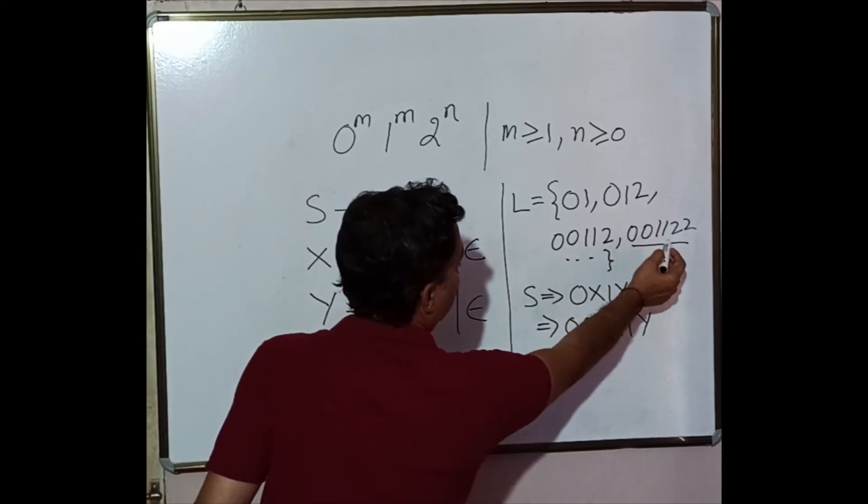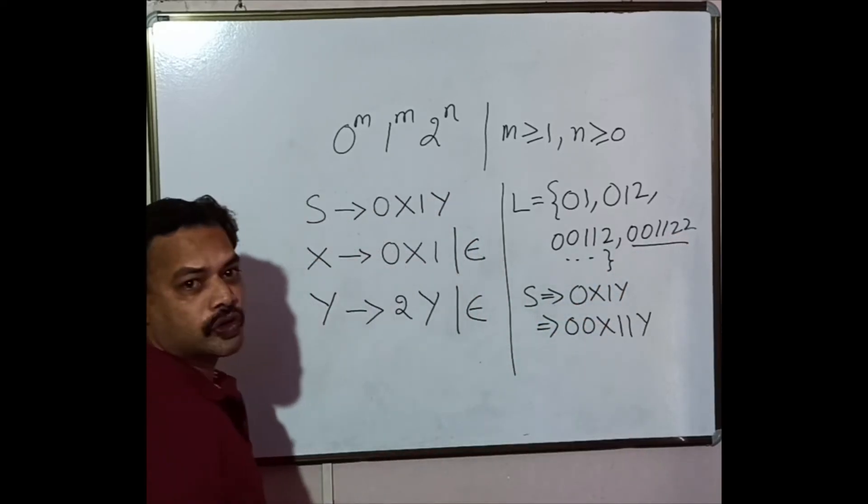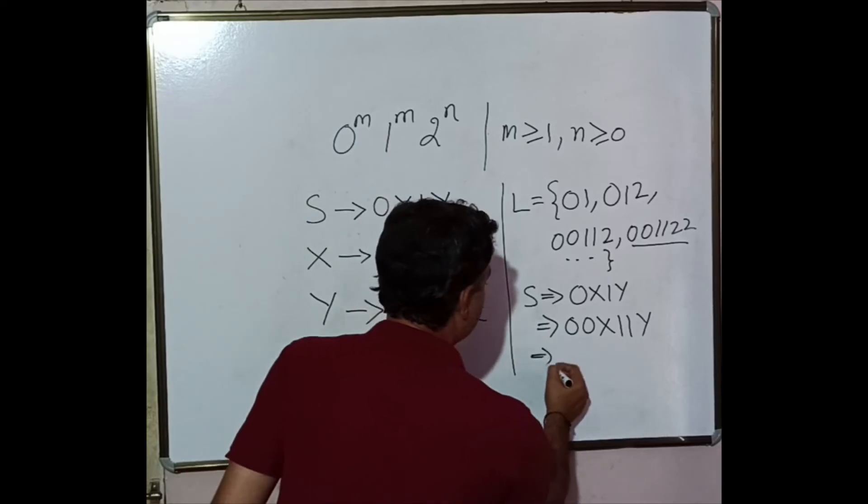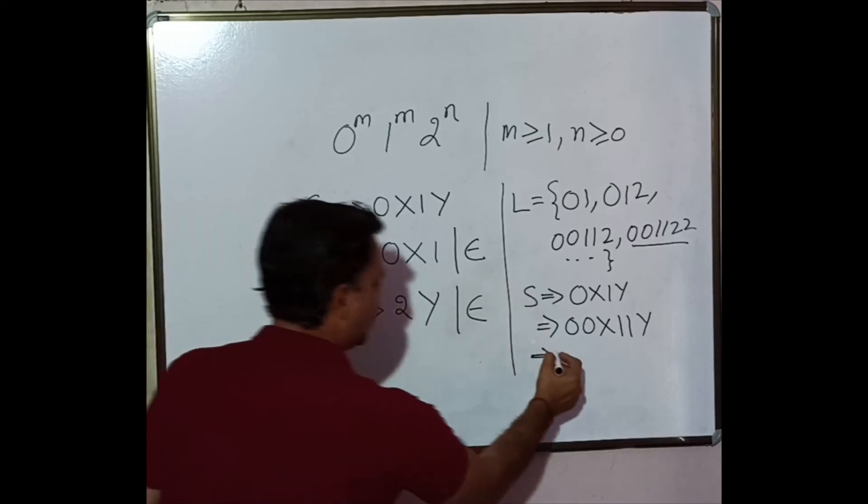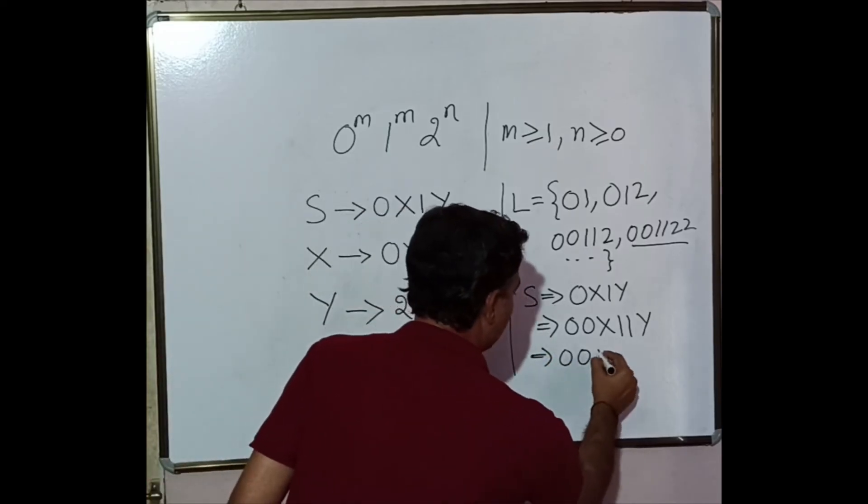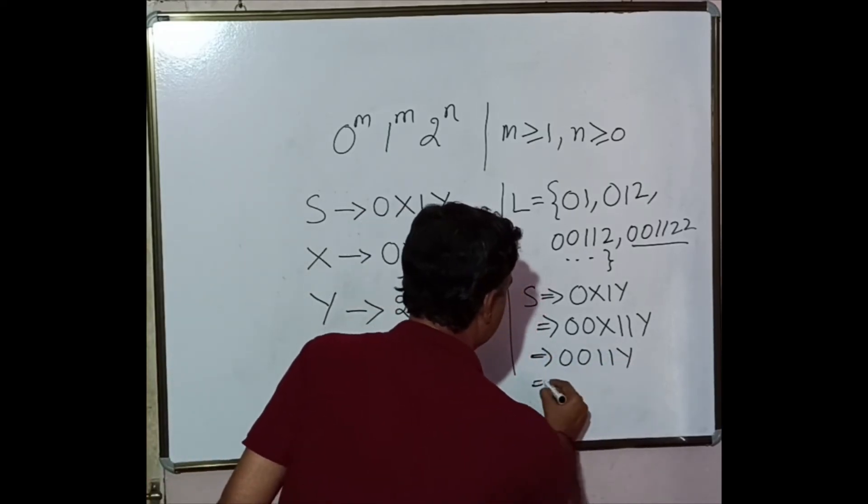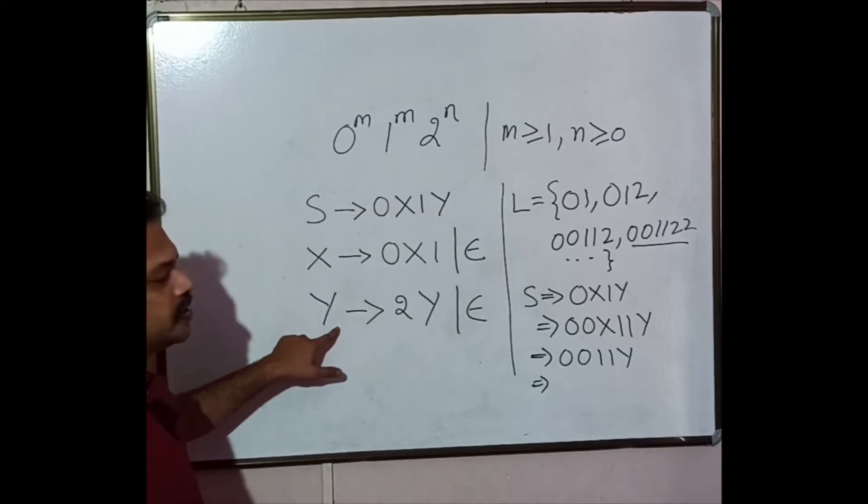Now that I have two 0's, two 1's, now I have to take care of number of 2's. So let us stop this recursion, first recursion, by replacing epsilon. That gives us 0, 0, 1, 1, Y.